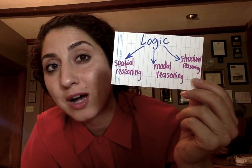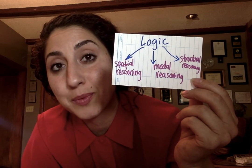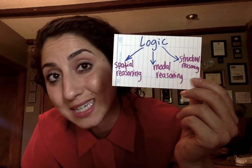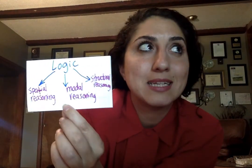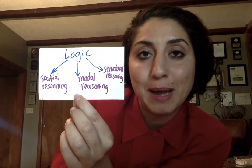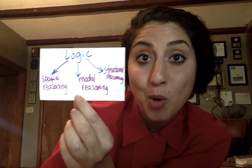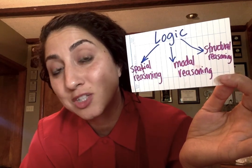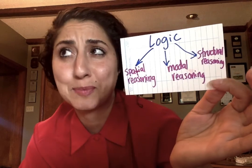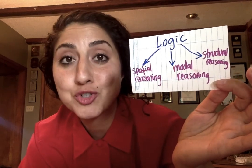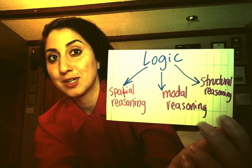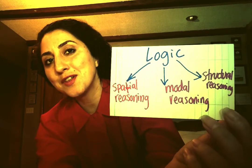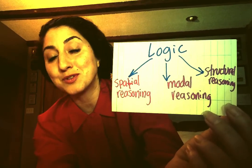Reasoning about how objects interact with the three-dimensional space around them is spatial reasoning. Thinking about the way things could have been, should have been, or might possibly be is modal reasoning. Conceiving of a conclusion as supported by premises or not supported by enough premises is structural reasoning. So logic is the study of how we ought to reason, but there are different things to reason about and different ways to reason.